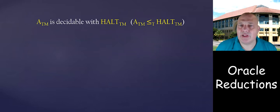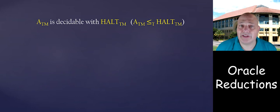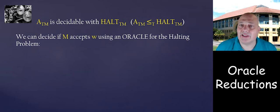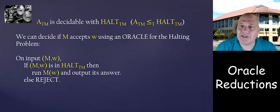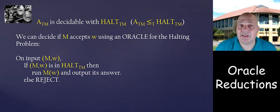Let's see some examples. ATM is decidable with HALT_TM — meaning ATM is Turing-reducible to HALT_TM. We can decide if M accepts w using an oracle for the halting problem: on input ⟨M,w⟩, ask if ⟨M,w⟩ is in HALT_TM. If yes, run M on w and output its answer; otherwise reject. This is a Turing reduction from ATM to HALT_TM.